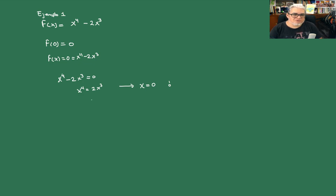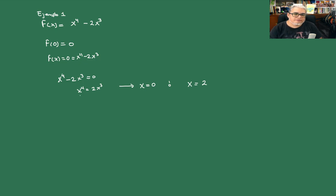o bien, si suponemos que x no es 0, entonces podemos cancelar las x cúbicas y tendríamos que x es igual a 2. Si x es igual a 0 se cumple esta ecuación trivialmente, y si x es distinto de 0 podemos dividir entre x cúbica de ambos lados, y entonces nos queda que x es igual a 2.